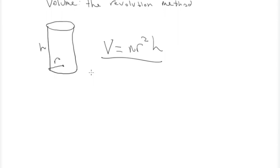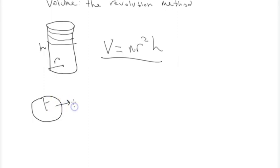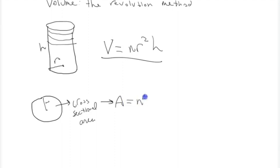However, we can look at this volume in a different way and we'll get to the same volume equation, but think about it differently. Imagine you slice this up into multiple slices. If you were to take out one of these slices and look at it straight on, it would basically just be a circle with a radius. The area of that circle is called the cross-sectional area of the cylinder, and that is A equals pi r squared.